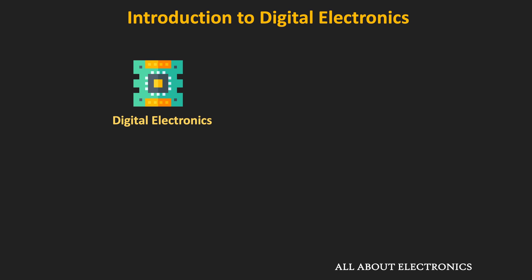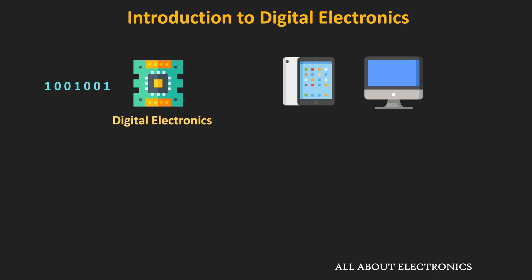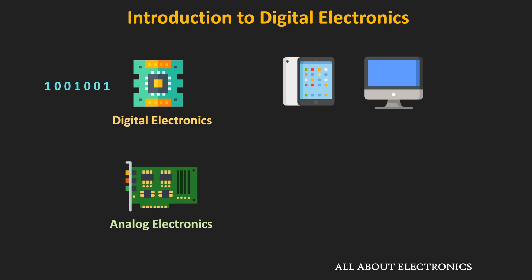Digital Electronics is a field of electronics which deals with digital signals — signals which are processed or generated using electronic circuits that are digital in nature. Smartphones, personal computers, and many communication devices we use in day-to-day life are examples of it. On the other end, Analog Electronics deals with analog signals; amplifiers, timing, and wave-shaping circuits are examples of analog circuits.